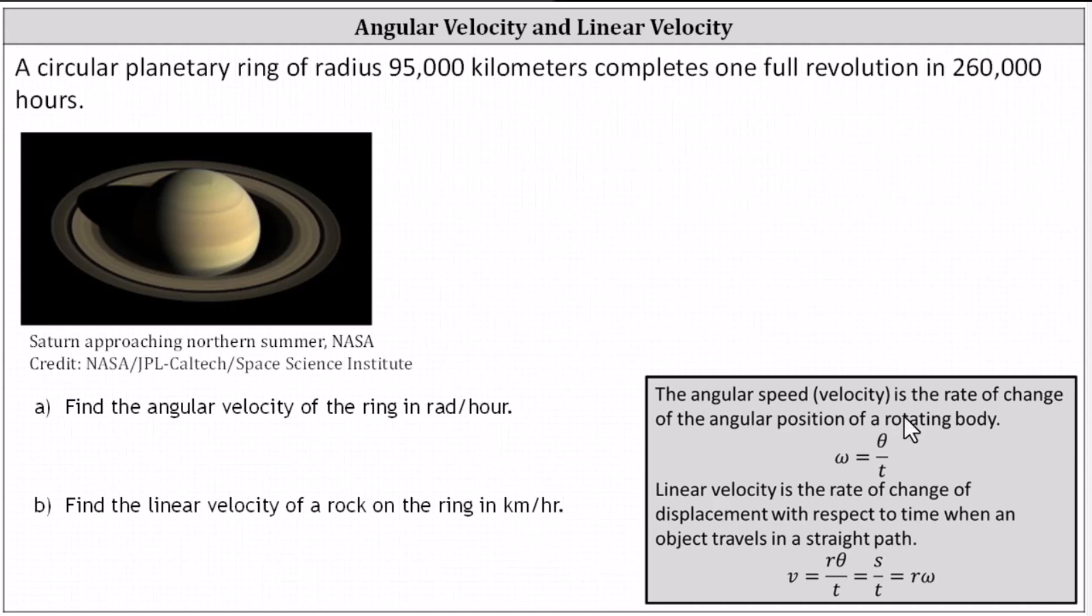The angular velocity or speed is the rate of change of the angular position of a rotating body. The angular velocity omega equals theta, the change in the angle, divided by time t. The linear velocity is the rate of change of displacement with respect to time when an object travels in a straight line.